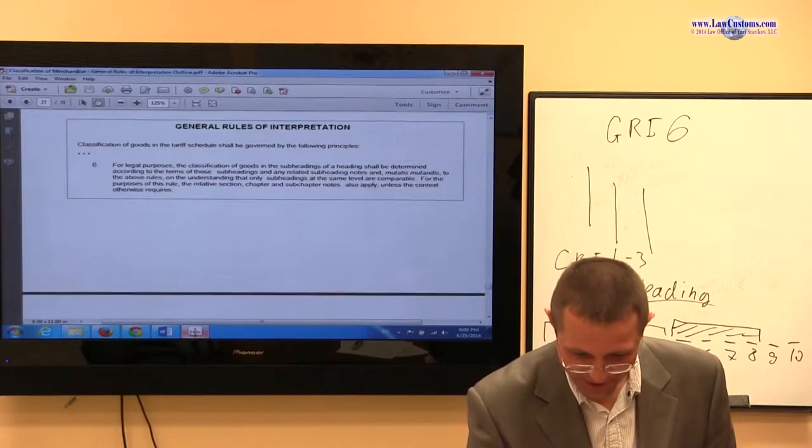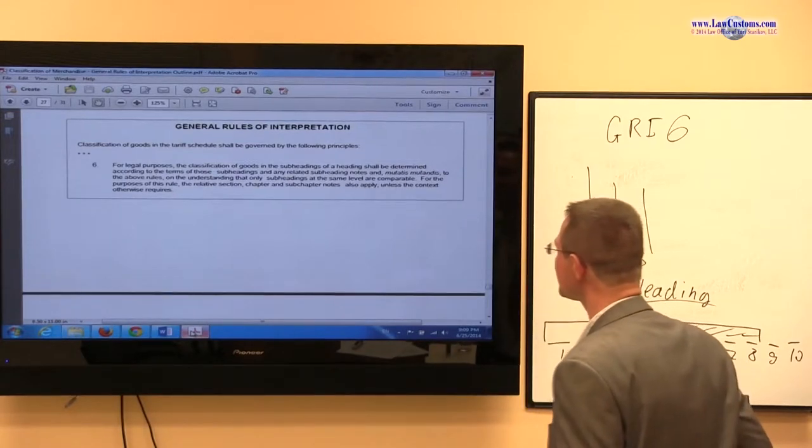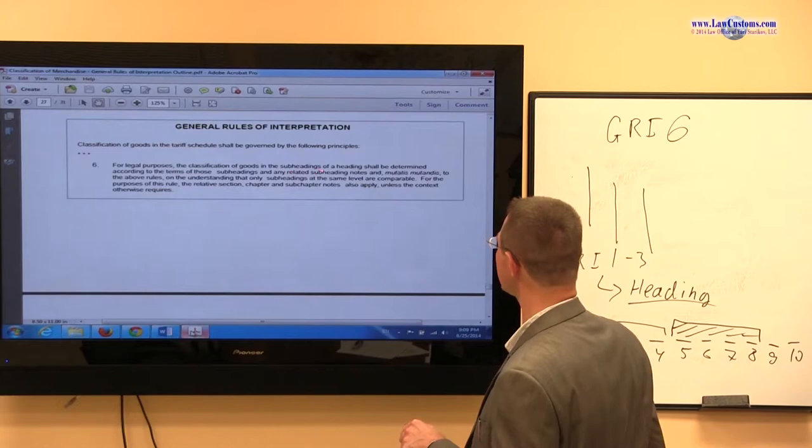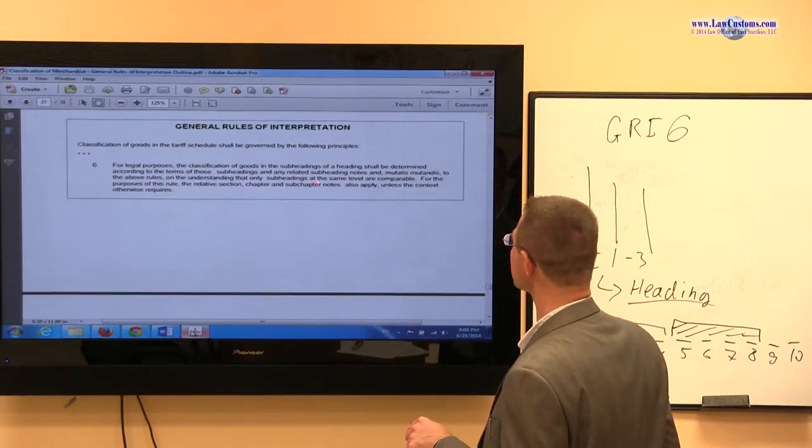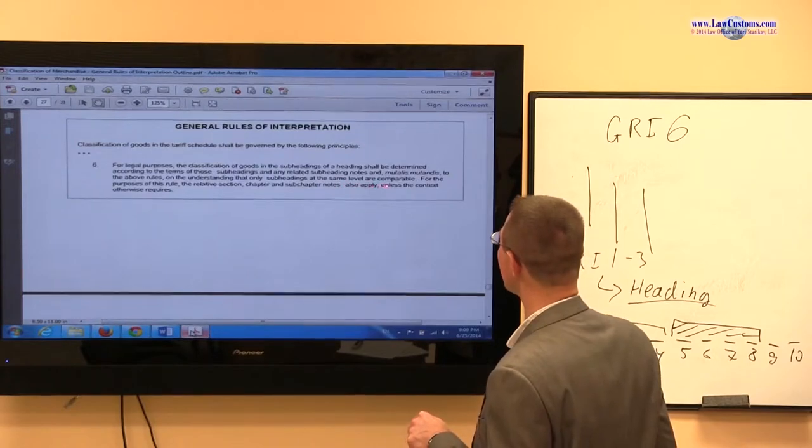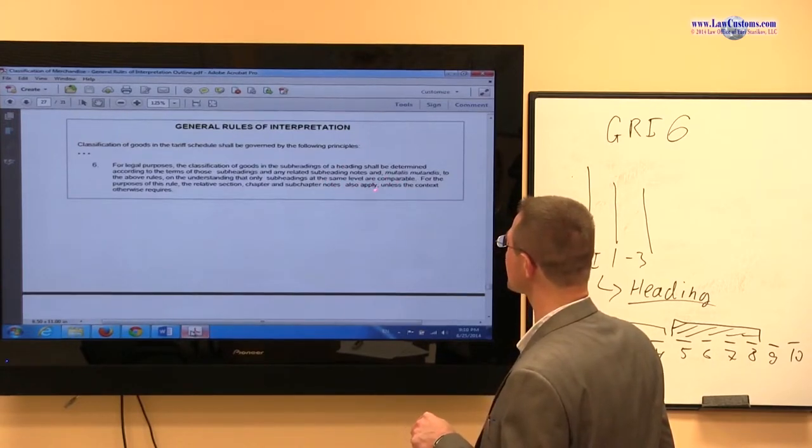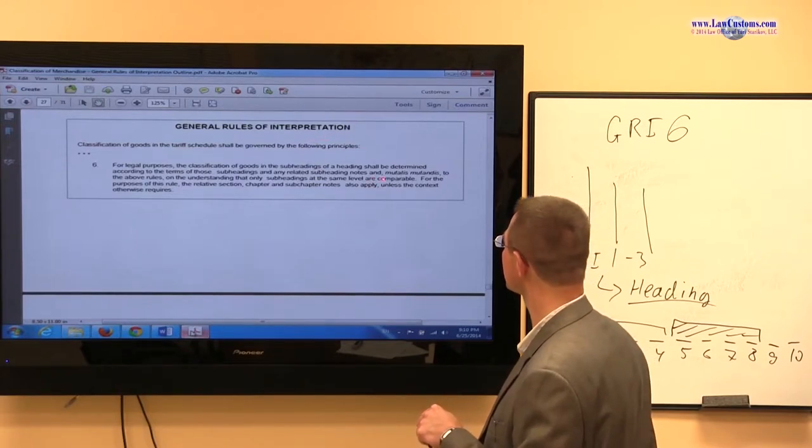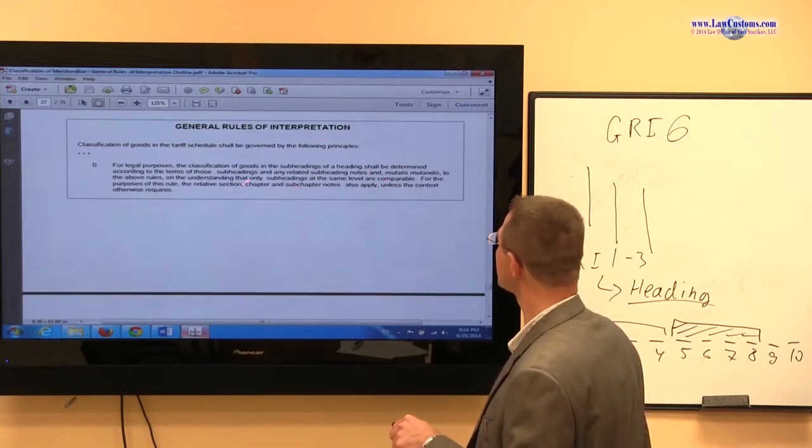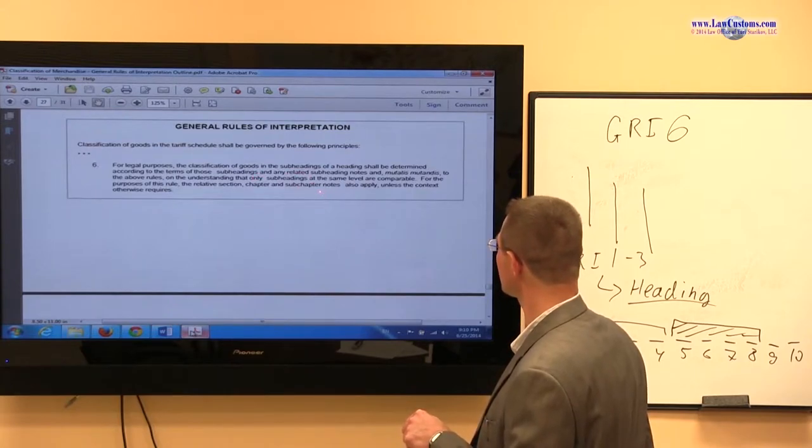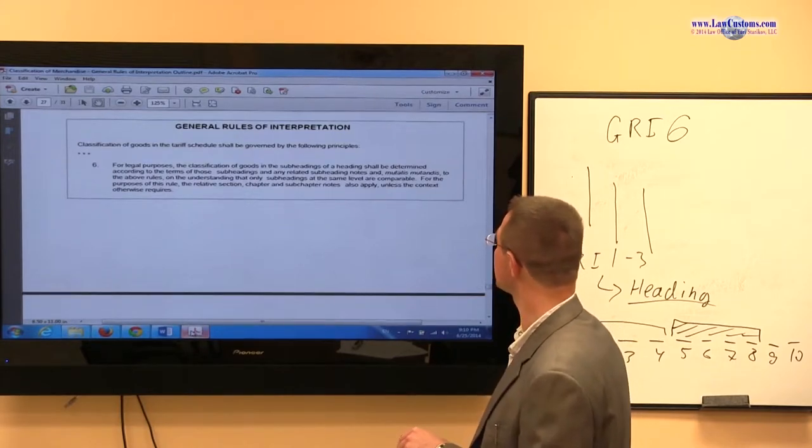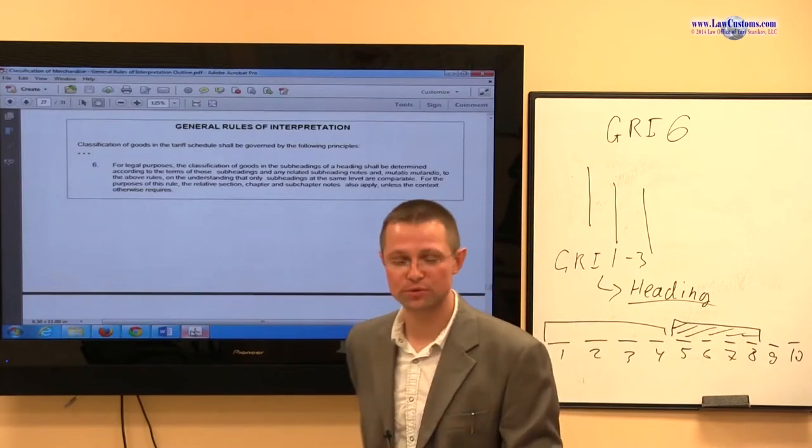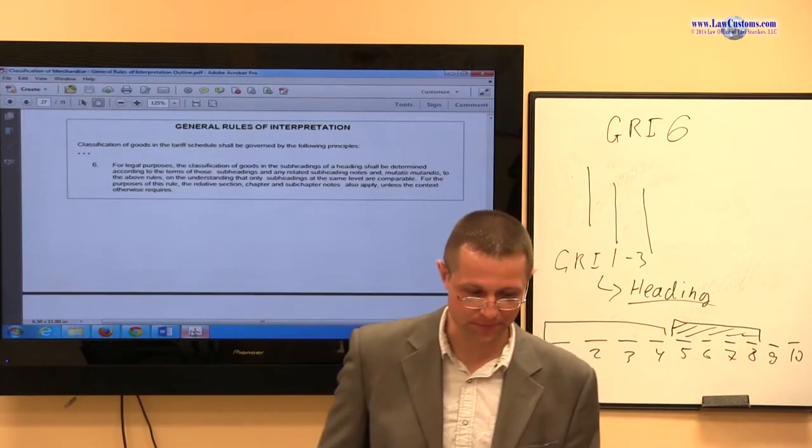In other words, what GRI 6 says is that classification of goods in subheadings shall be determined to the terms of subheadings, so long as the subheadings at the same level are comparable. So stick to the same level analysis. And of course, you have chapter subchapter notes, which is GRI 1, and you have heading and subheadings notes also. Those are all legally binding, so it's a must.